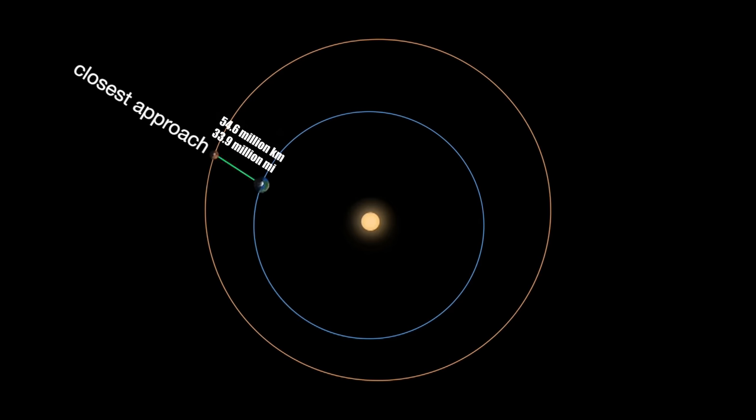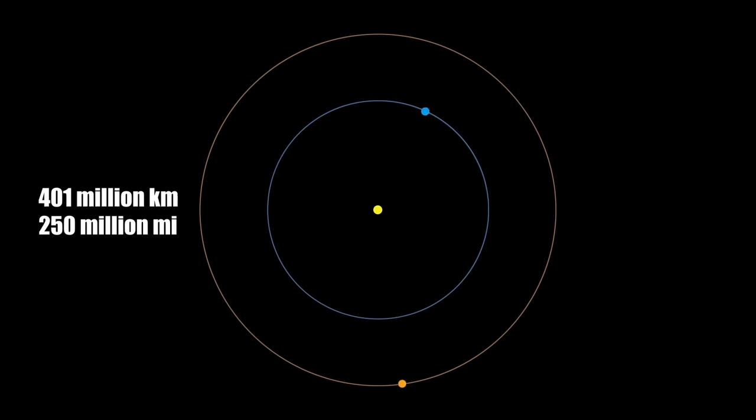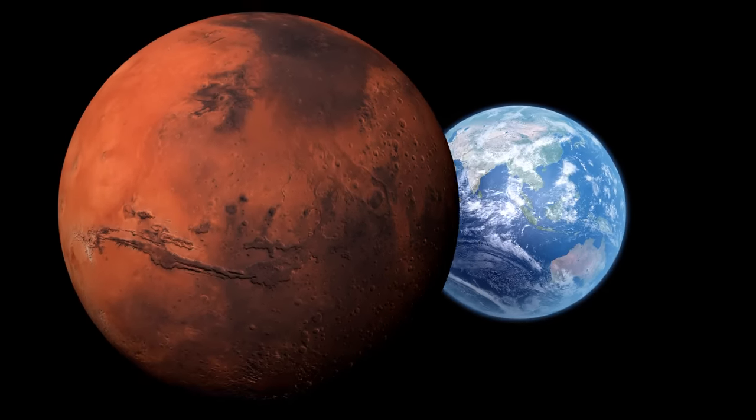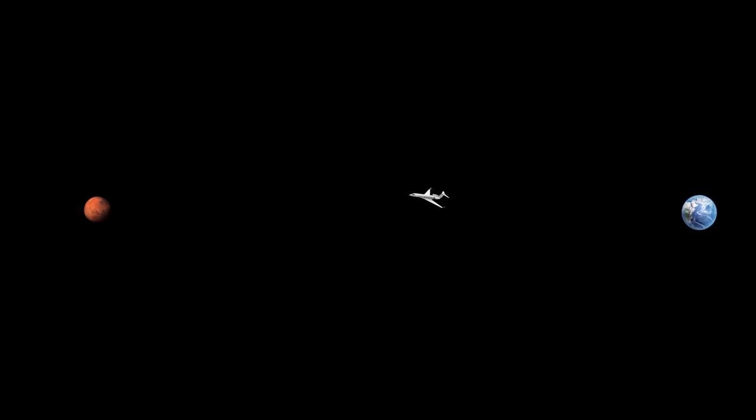However, this distance can stretch up to 401 million kilometers when the two planets are on opposite sides of the sun. To put that in perspective, traveling to Mars at the speed of a commercial jet would take upwards of 50 years.